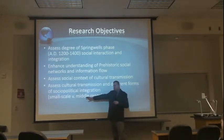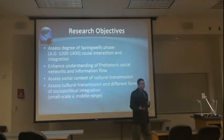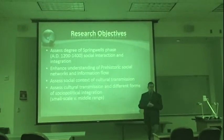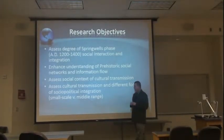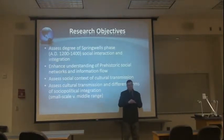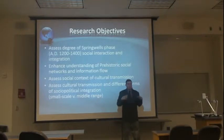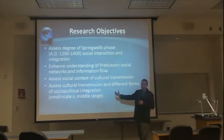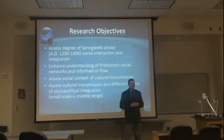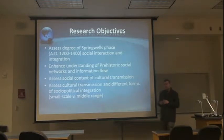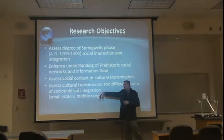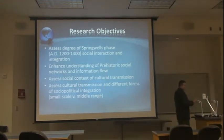Small-scale integration is often associated with hunter-gatherer bands — groups of 25 to 30 people moving across the landscape. Middle-range societies are often characterized as tribal societies: larger groups integrated anywhere between 100 to 500 people in the classic anthropological literature. That changes as you move through time into contemporary context, but when you think about the anthropological literature, that's what we're talking about. So how does information flow through networks with different layers of complexity? We don't have a good feel for that, at least pre-historically.